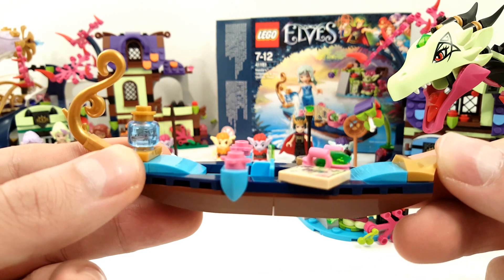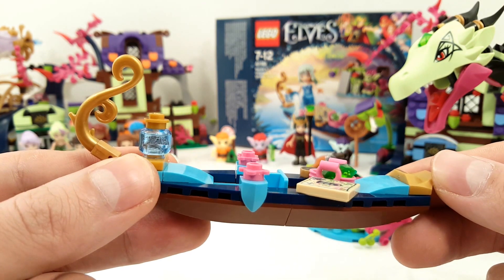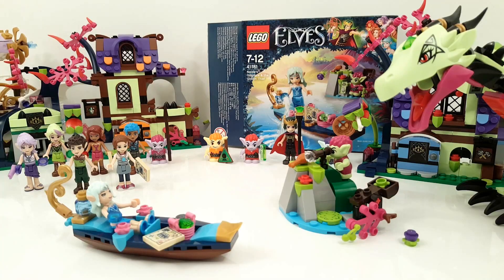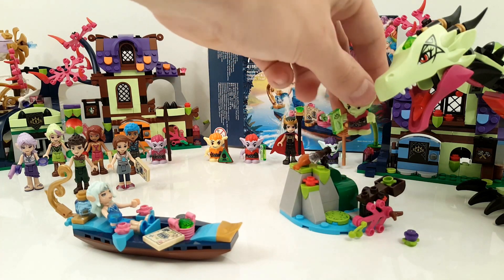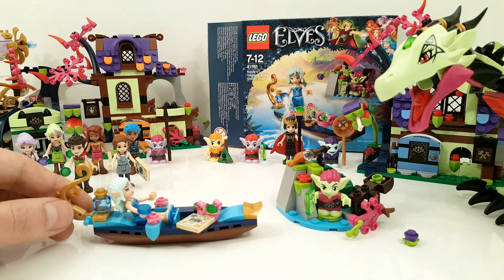Here we have the Gondola. I think it's a cute nice Gondola that looks exactly like in the series. The Goblin can look through the spyglass to see if there are any crystals to steal. And there's a little shooter to attack Naida.